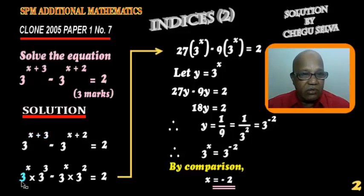So 3 to the power of x times 3 to the power of 3 minus 3 to the power of x times 3 to the power of 2 equals to 2.